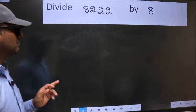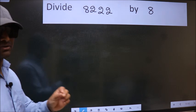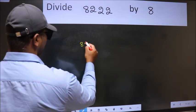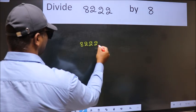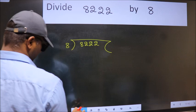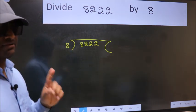Divide 8222 by 8. To do this division, we should frame it in this way: 8 goes into 8222. This is step 1.